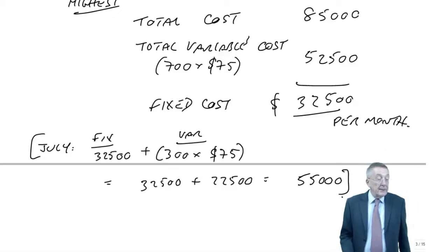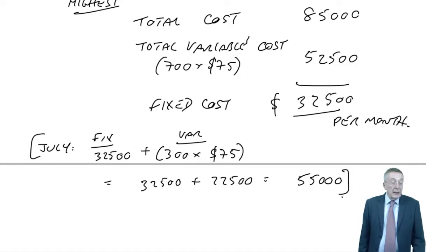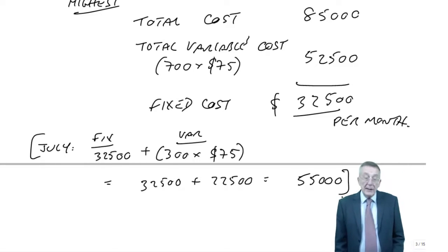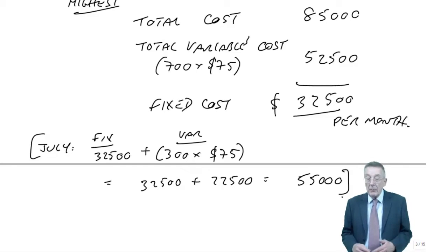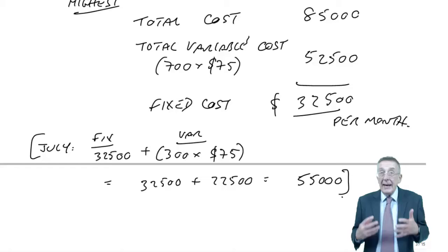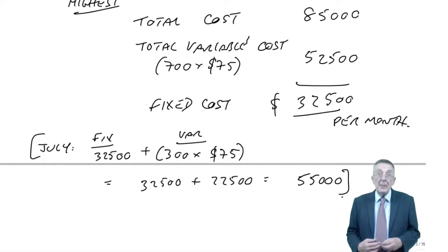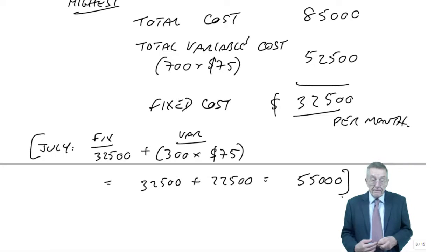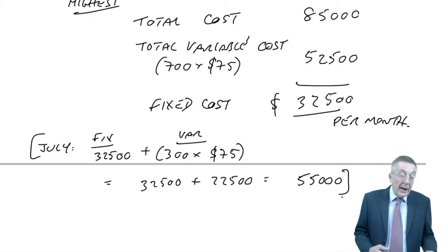And that's why, if you've done F2, you'll know regression analysis is a better, a more accurate way of estimating them. But again, you can't be asked to do regression analysis in paper F5. That was easy.